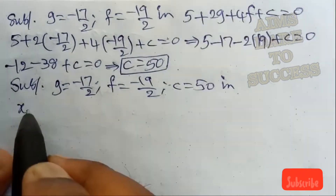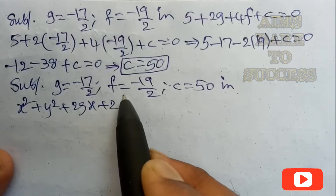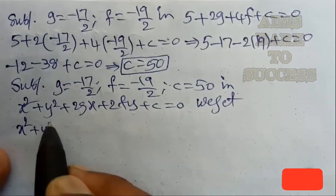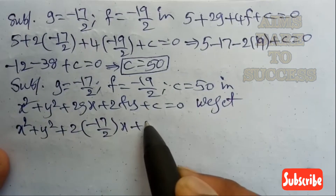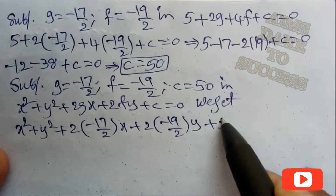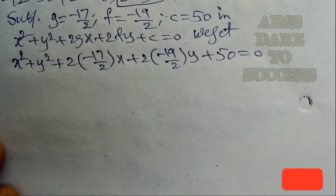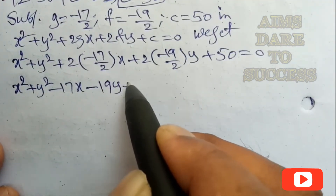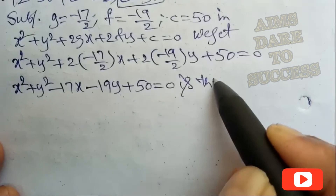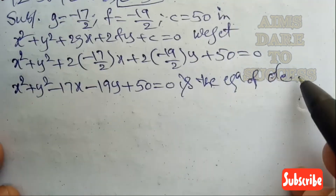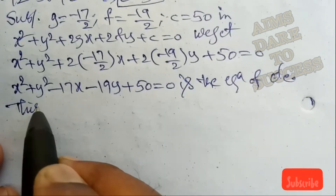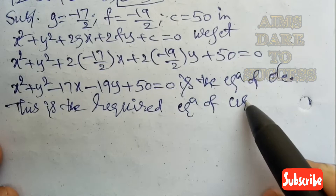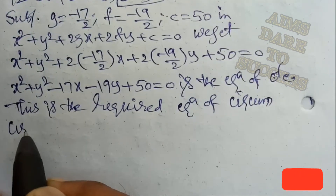Substituting g=−17/2, f=−19/2, and c=50 into the standard equation x²+y²+2gx+2fy+c=0: the 2s cancel, giving x²+y²−17x−19y+50=0. This is the required equation of the circumcircle of the triangle formed by the three given lines.